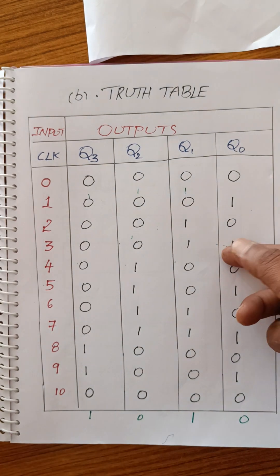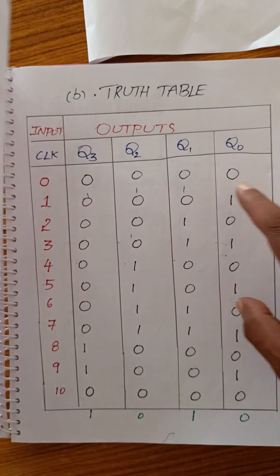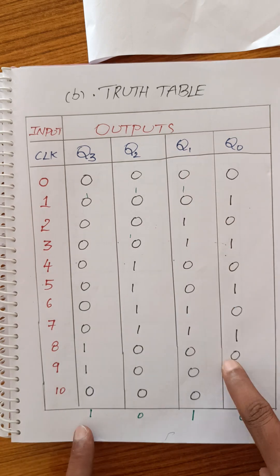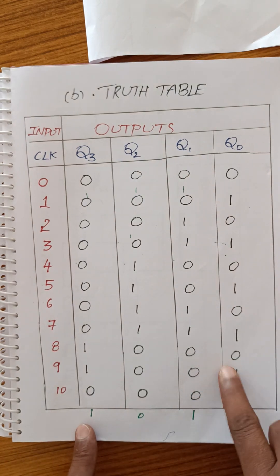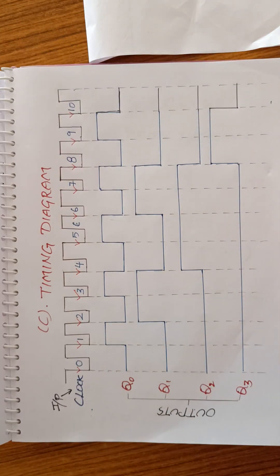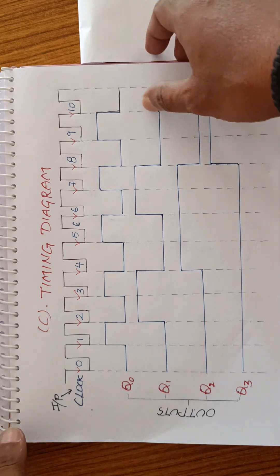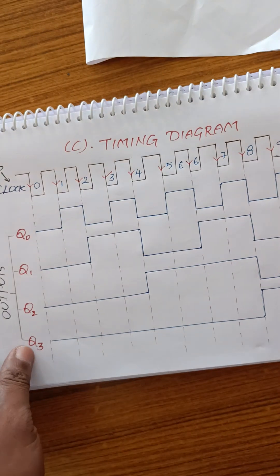This is the truth table for the decade counter, counting 0 to 9, including the 10th pulse reset. Now let us see the timing diagram.